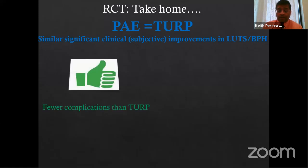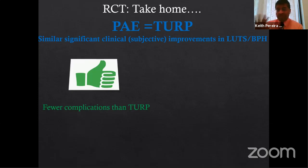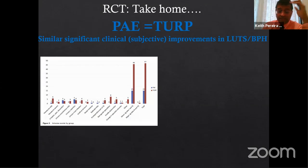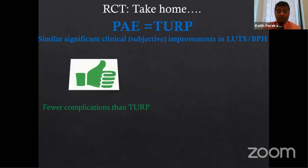PAE's advantages over TURP include fewer complications. The side effect profile of PAE is so good that we rarely get calls from patients after the procedure — perhaps one call about urinary infection-type symptoms, but after that they simply don't call, which means things are going well. Very few complications, very few sexual side effects, no hospital admission, no blood transfusion, and no major immediate complications. That's where PAE has a huge edge.